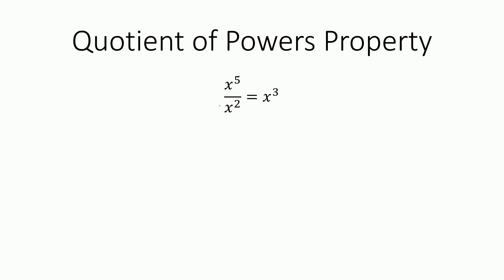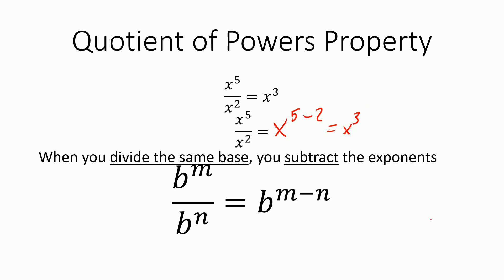Similar to the product of powers property, the quotient of powers property, because it's representing an opposite of multiplication, when we divide two of the same base with different powers, you can see that five minus two equals three. So we could rewrite it as x to the five minus two, which is x to the third. And that's the shortcut. So when we multiply, we add, and when we divide the same base, then we subtract the exponents. So for any base b to the m over b to the n, it would be b to the m minus n.